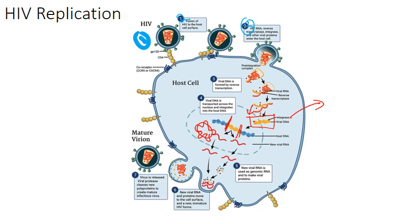The integrase is another target for antiretroviral therapies. Integrase inhibitors work directly on the enzyme and inhibit the transfer of this proviral DNA into the host genome. Examples include dolutegravir, which is pretty common, as well as raltegravir.